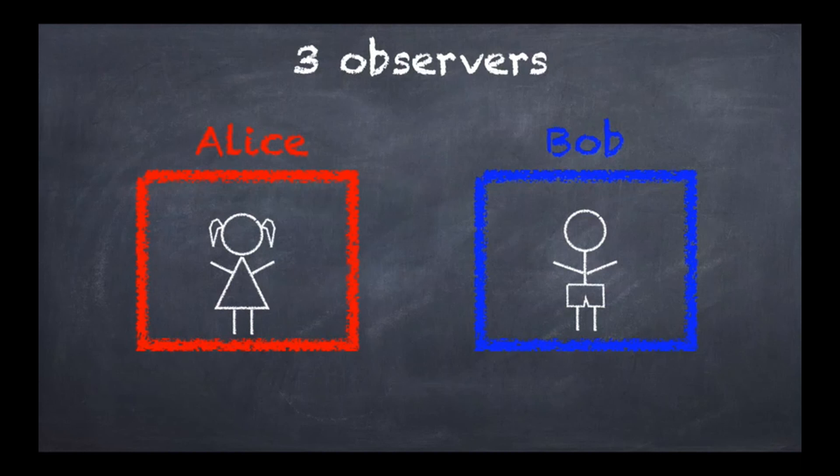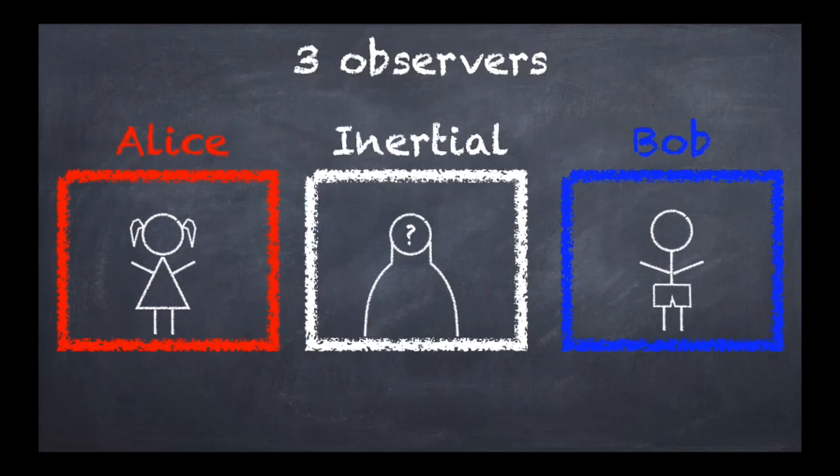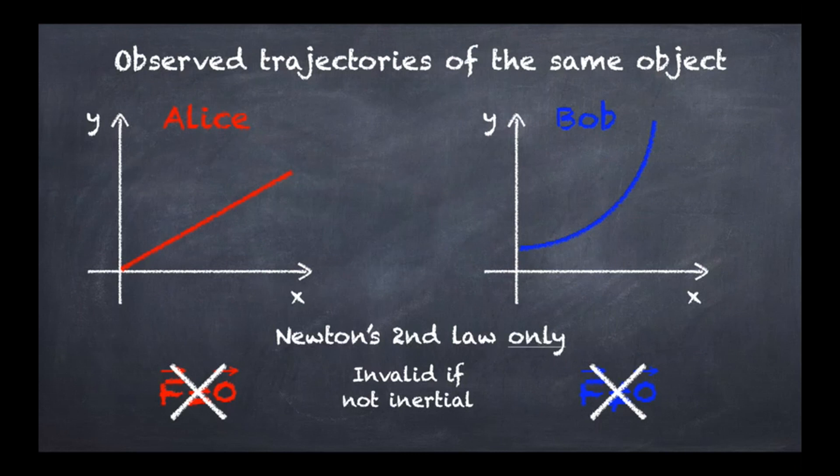As a result what happens is that we don't have two observers anymore in our problem, we actually have Alice, Bob and then a third observer to whom the statement is directed. This particular observer is the so-called inertial observer and this is the only kind of observer that can make a conclusion about the existence or non-existence of forces. When we reach this situation, these judgments about f become invalid as soon as the first law is introduced if neither Alice nor Bob are inertial observers.